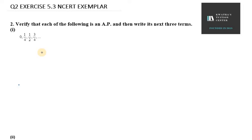We need to verify that it is an AP, then we have to find the next three terms. Let's find whether it is an AP or not. 1/4 minus 0 will give us 1/4. Let's find at the other two points.